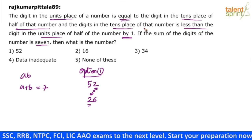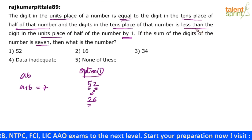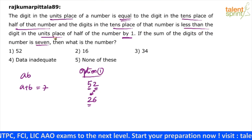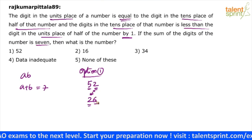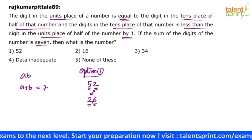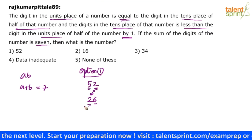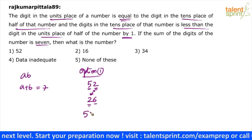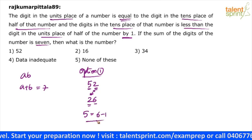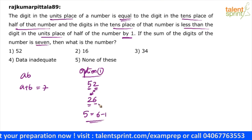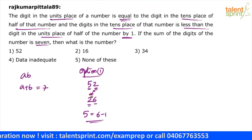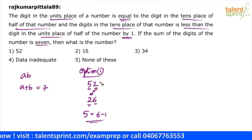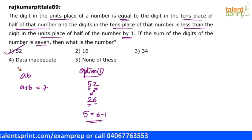The digit in the tens place of the number is 5, which is less than the digit in the units place of half of the number by 1 — 5 is 1 less than 6. So 2 equals 2, and 5 equals 6 minus 1. The second condition is also satisfied. The sum of the digits is 5 plus 2 equals 7, so the third condition is satisfied as well. Hence, 52 is the answer.